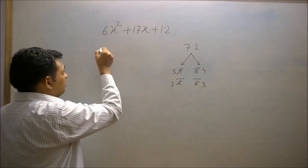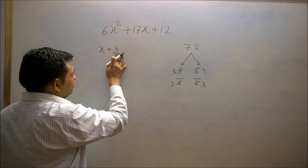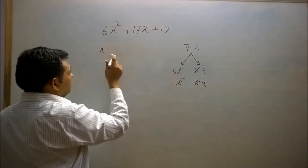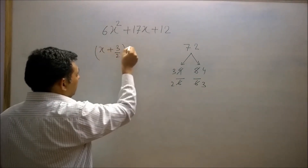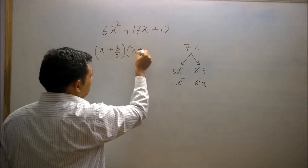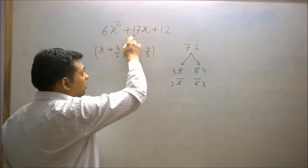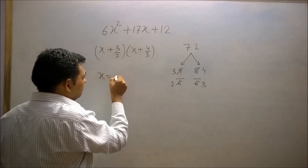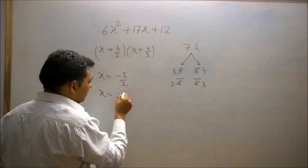So the factors of this polynomial are (x + 3/2)(x + 4/3), and the roots of this quadratic polynomial are x = −3/2 and x = −4/3.